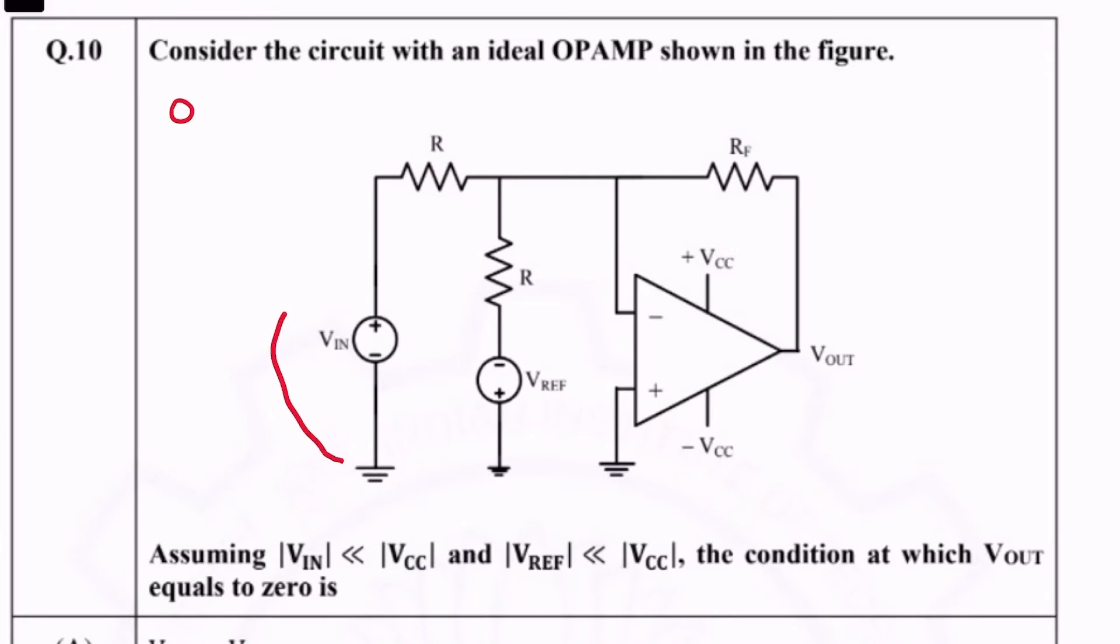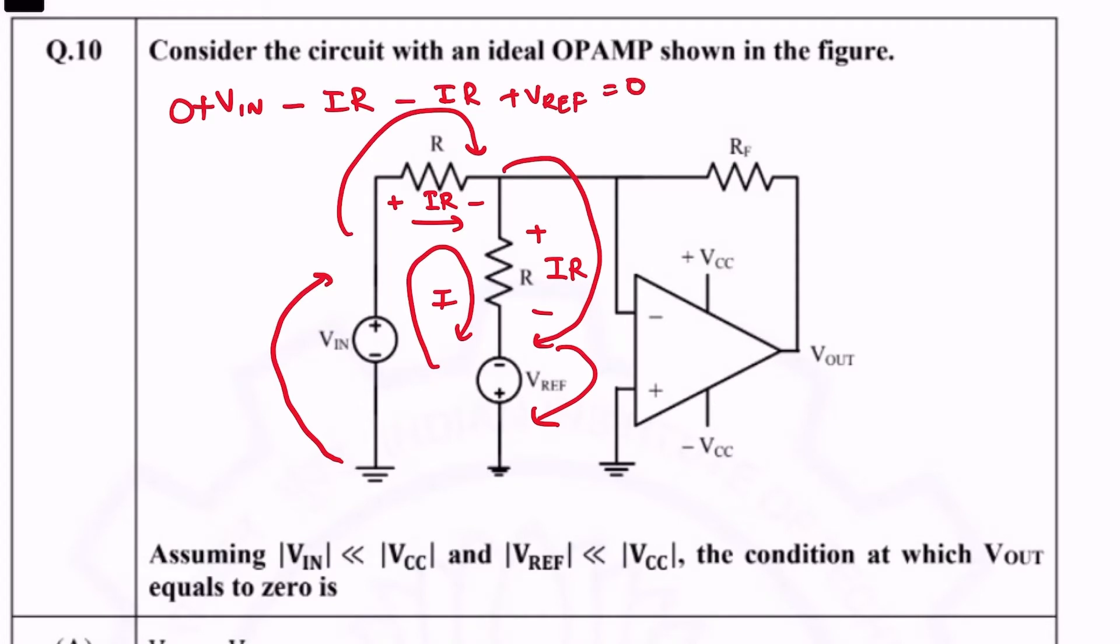0 plus Vin, because the polarity is positive. Let us say that the loop current is I. The drop here, the current is in this direction, so the drop is IR with that polarity, so minus IR. And again, it's another IR drop there, minus IR, and plus Vref is equal to 0.